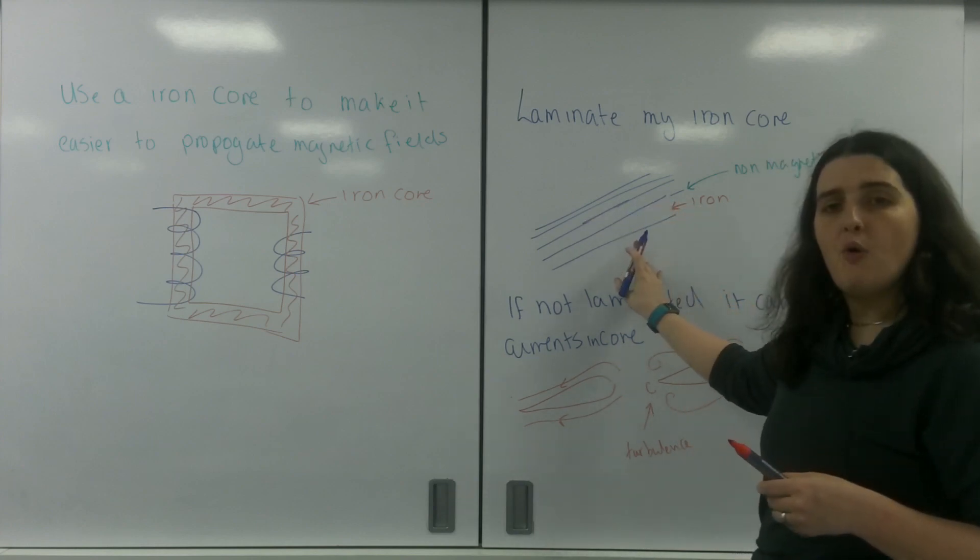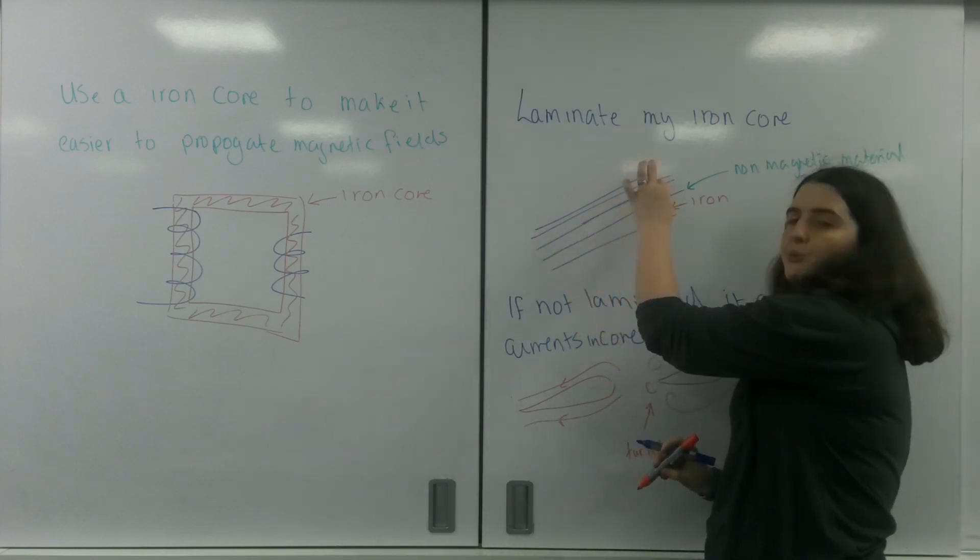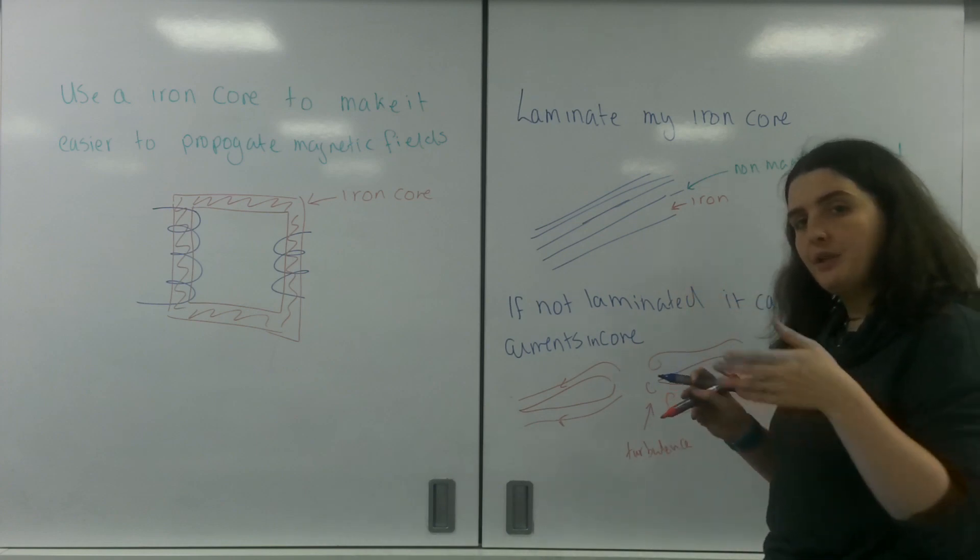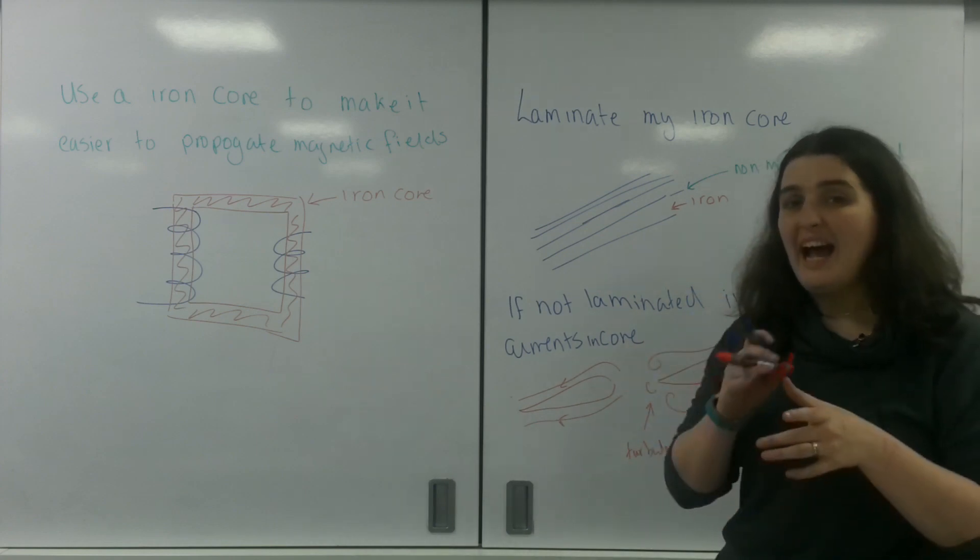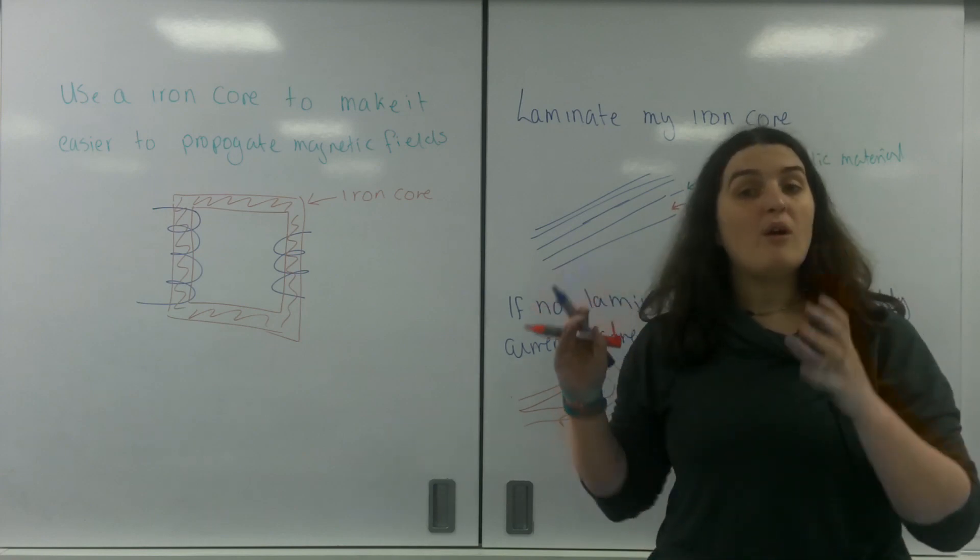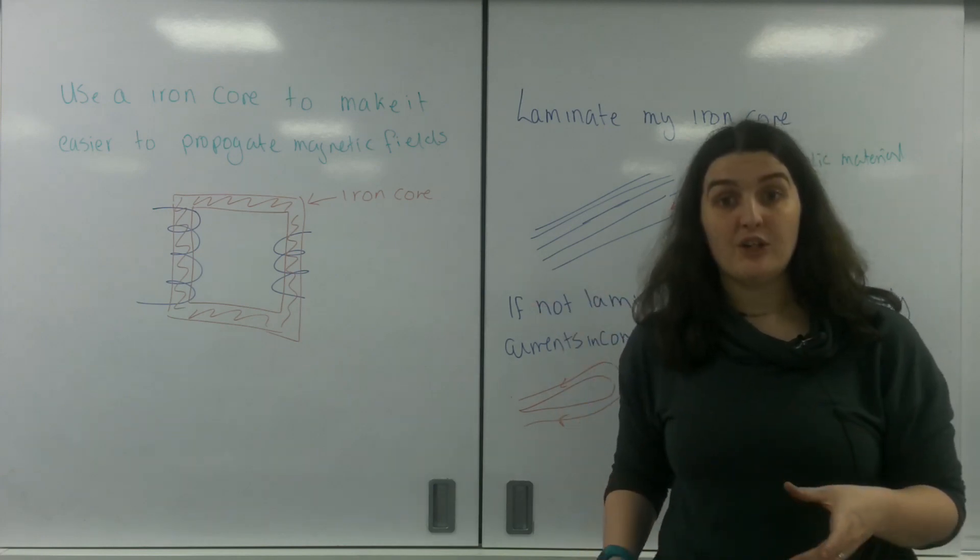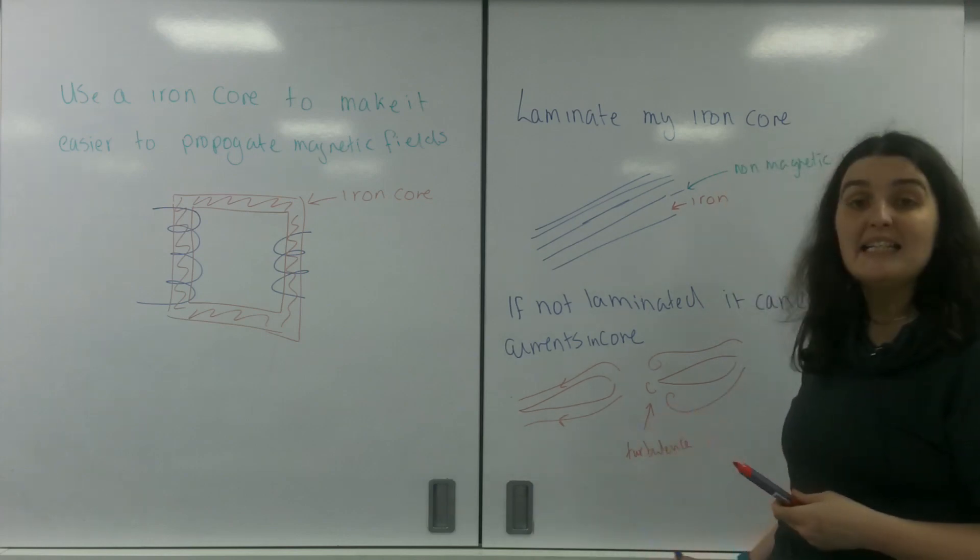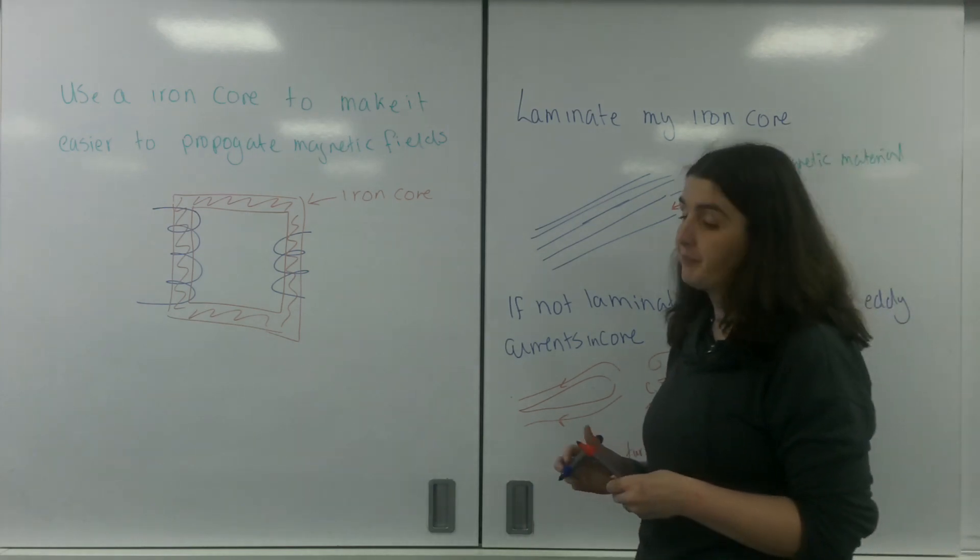So by laminating the core and allowing these funnels, I am forcing the magnetic field line to make sure it hits the core at right angles, meaning I have a nice flow of electrons in near enough a uniform direction rather than these eddy currents here.